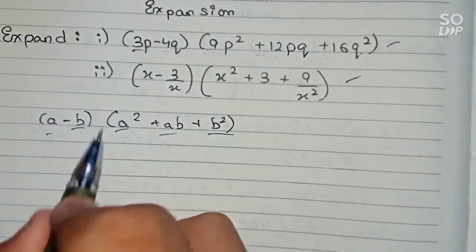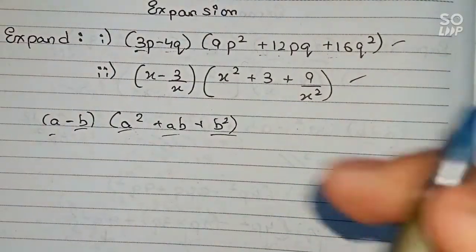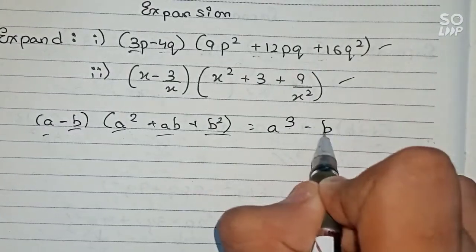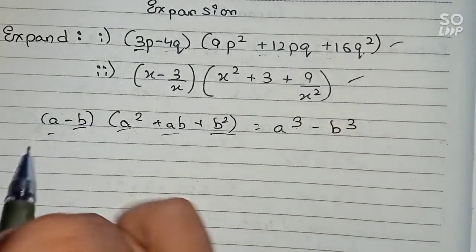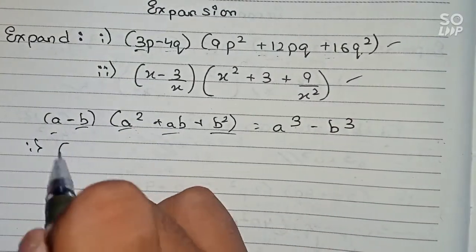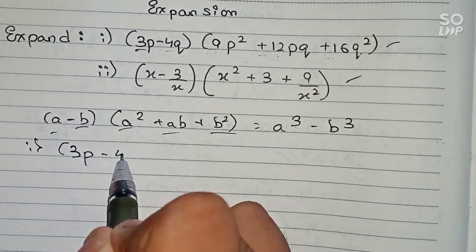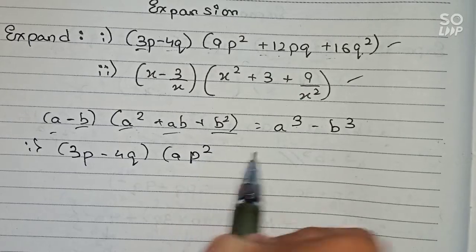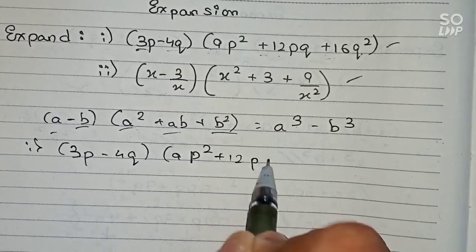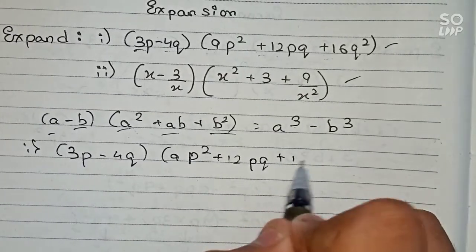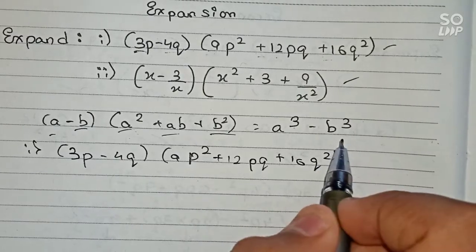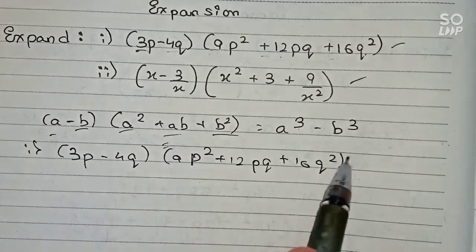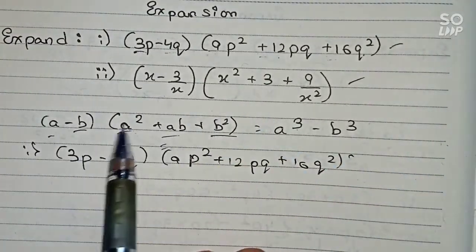So the answer for this expanded form will be a cubed minus b cubed. For question number one we write: (3p minus 4q) multiplied by (9p squared plus 12pq plus 16q squared). Now I will check that the second portion is equal to this portion — verifying the remaining components match the identity format.